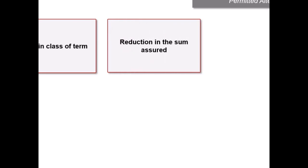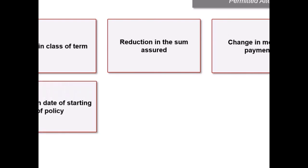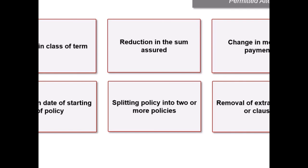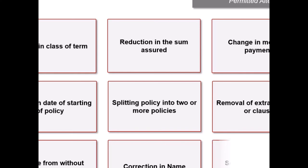Some of the main types of alterations that are permitted are: first, change in certain classes of insurance or term where risk is not increased; second, reduction in the sum assured; third, change in the mode of payment of premium; fourth, change in the date of commencement of the policy; fifth, splitting up of the policy into two or more policies; sixth, removal of an extra premium or restrictive clause; seventh, change from without profits to with profits plan; eighth, correction in name; and ninth, settlement option for payment of claims and grant of double accident benefit.